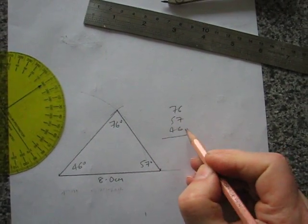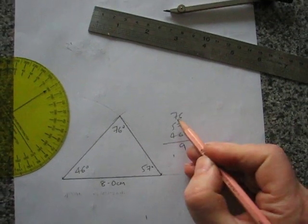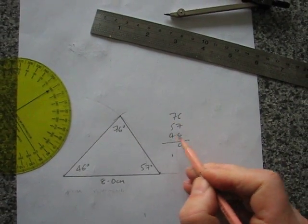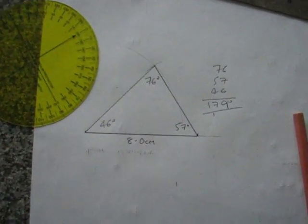76, 57 and 46. If we add those up, 6 and 7, 13, and 6 is 19, 7 and 5 is 12, 13, 14, 15, 16, 17, 179 degrees. So I'm a degree out for the three of them. That's OK, though.